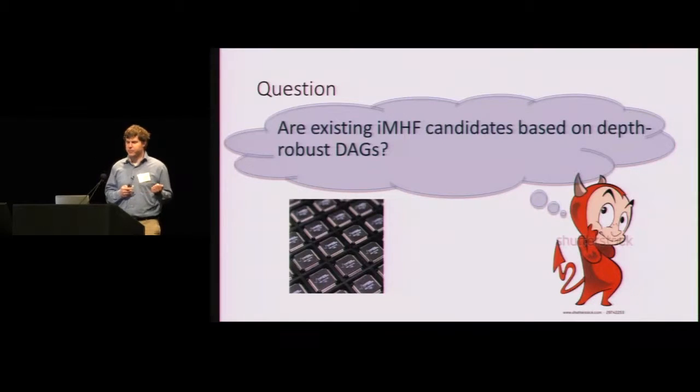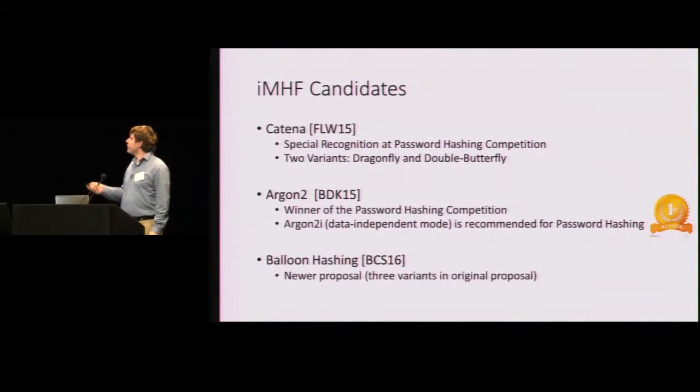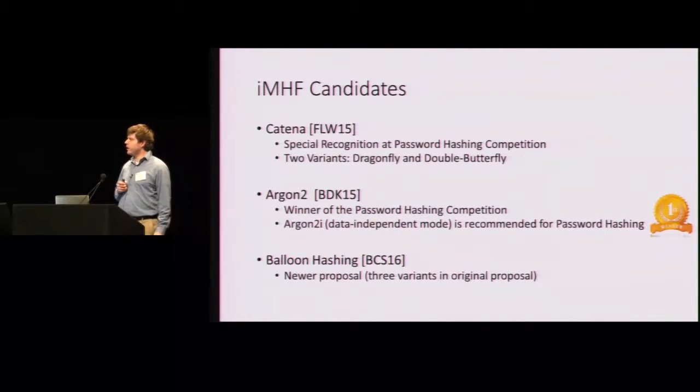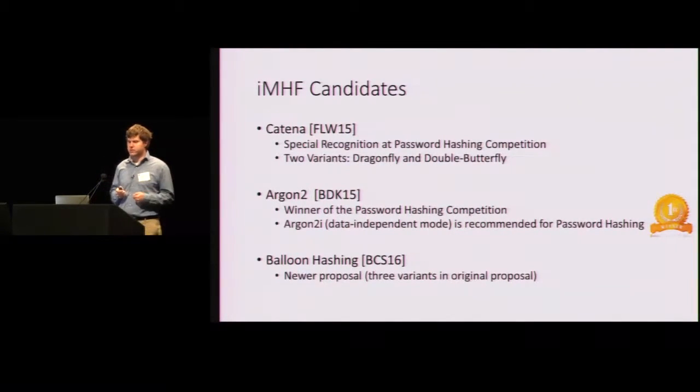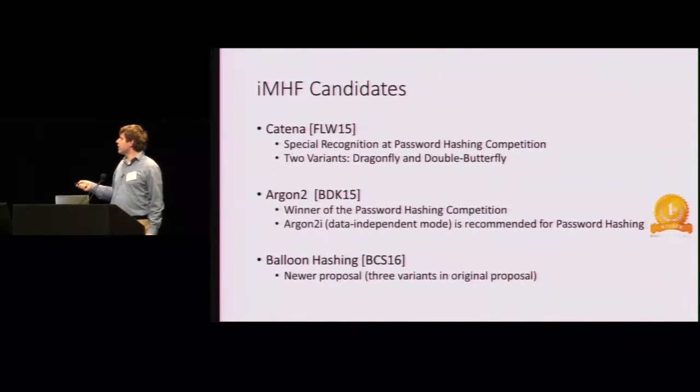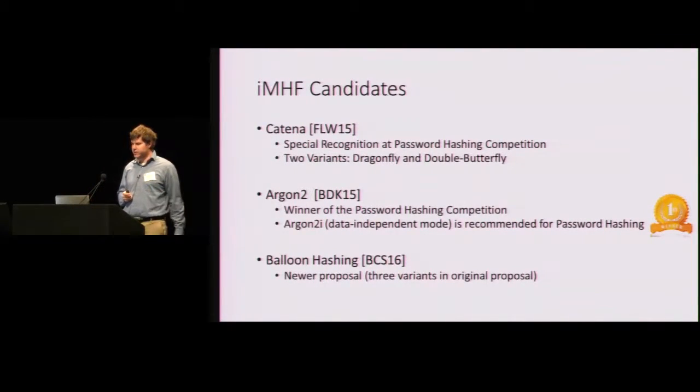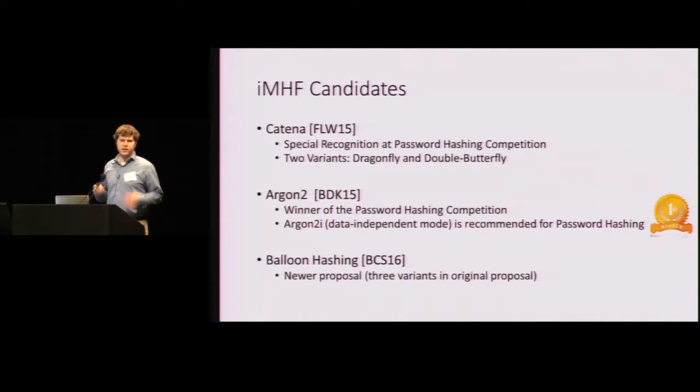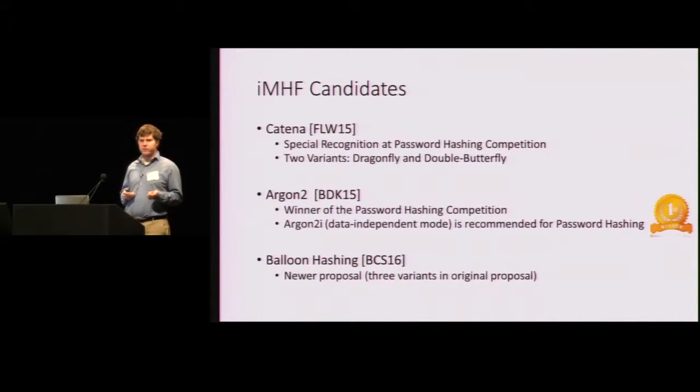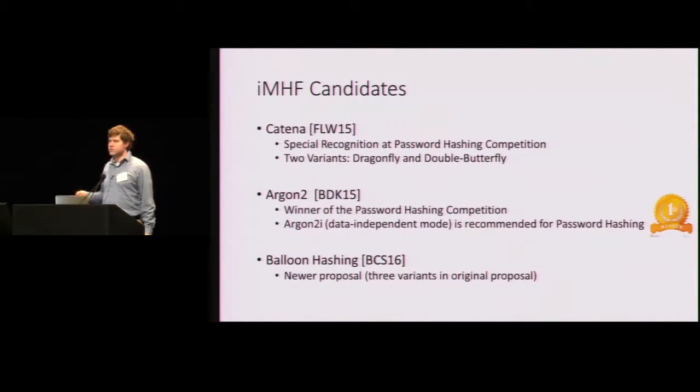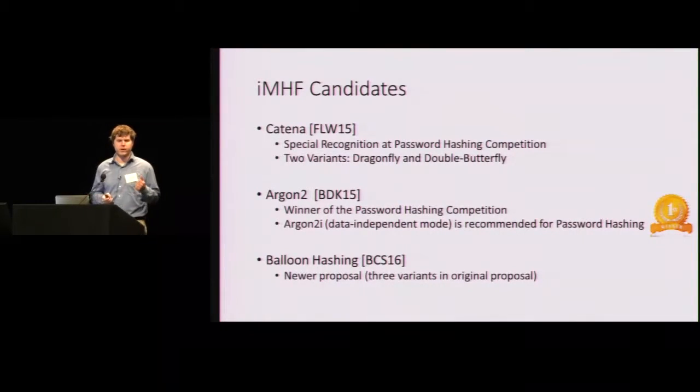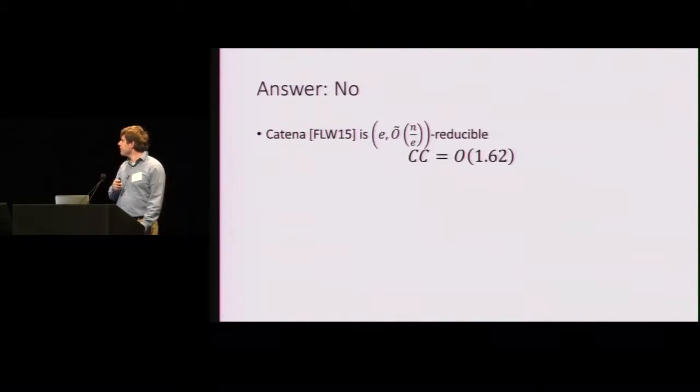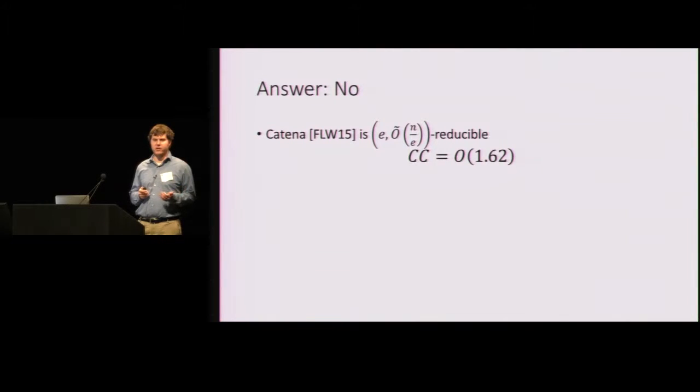So now we have an attack, a generic attack on any depth reducible graph. The question then is, are existing IMHF candidates based on depth-robust DAGs? So in this talk, I'll consider a few different IMHF candidates. There's Katana, an entry into the password hashing competition, which received special recognition. There's Argon2, the winner of the password hashing competition. In particular, Argon2i, the data independent mode, is the recommended mode for password hashing. There's a newer proposal called balloon hashing. And the original paper had three variants. But in summary, the answer is no. None of these graphs are depth-robust.